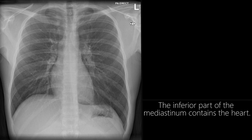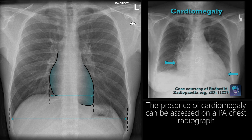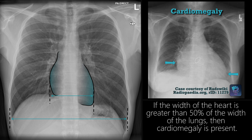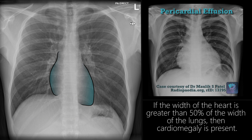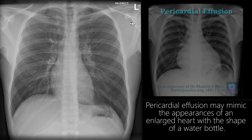The inferior part of the mediastinum contains the heart. On the right, the border is formed by the right atrium, whilst the left border is formed by the left ventricle. The presence of cardiomegaly can be assessed on a PA radiograph. If the width of the heart is greater than 50% of the width of the lungs, then cardiomegaly is present. Pericardial effusion may mimic the appearance of an enlarged heart with the shape of a water bottle.